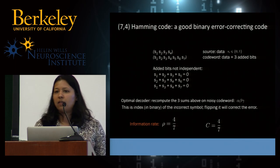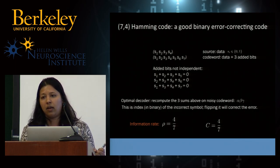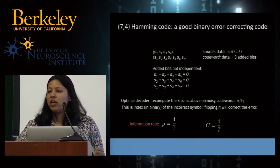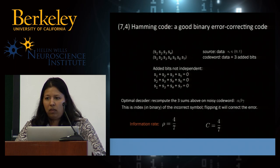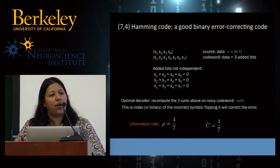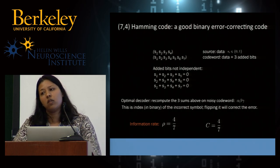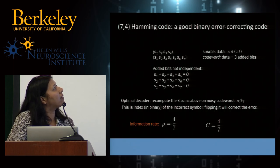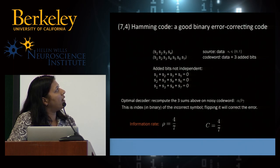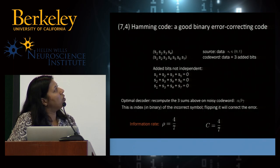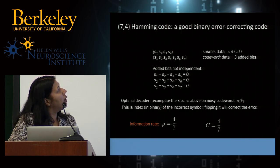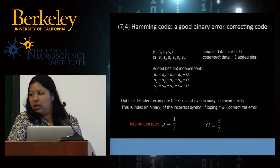Since the motivation comes from error correcting codes, we could just take a good error correcting code and try to implement it in a Hopfield network. Let's take the famous 7-4 Hamming code. It has four bits carrying information — a binary vector of length four — and these four information bits are embedded in a codeword of length seven, with three additional redundant parity check bits appended. These three additional bits satisfy algebraic relationships where the sum mod two equals zero.